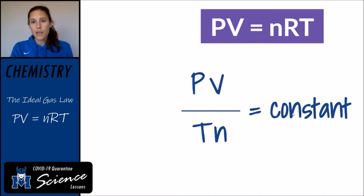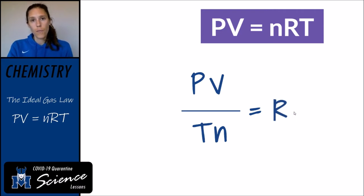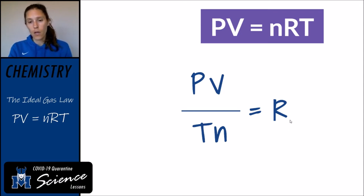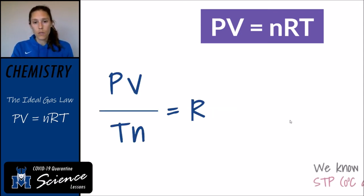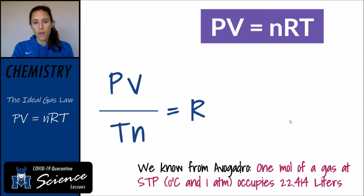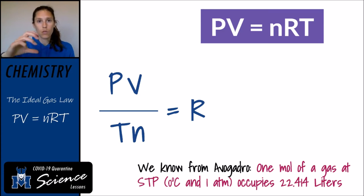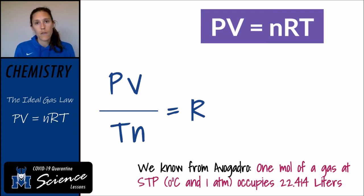In the ideal gas law equation, we give that constant the variable R. But what is this R value? Let's think about what Avogadro told us — we did this when we were doing mole conversions. When converting from moles of a gas to liters of a gas, we said that there's always 22.4 liters of gas if you have one mole of gas at standard temperature and pressure.